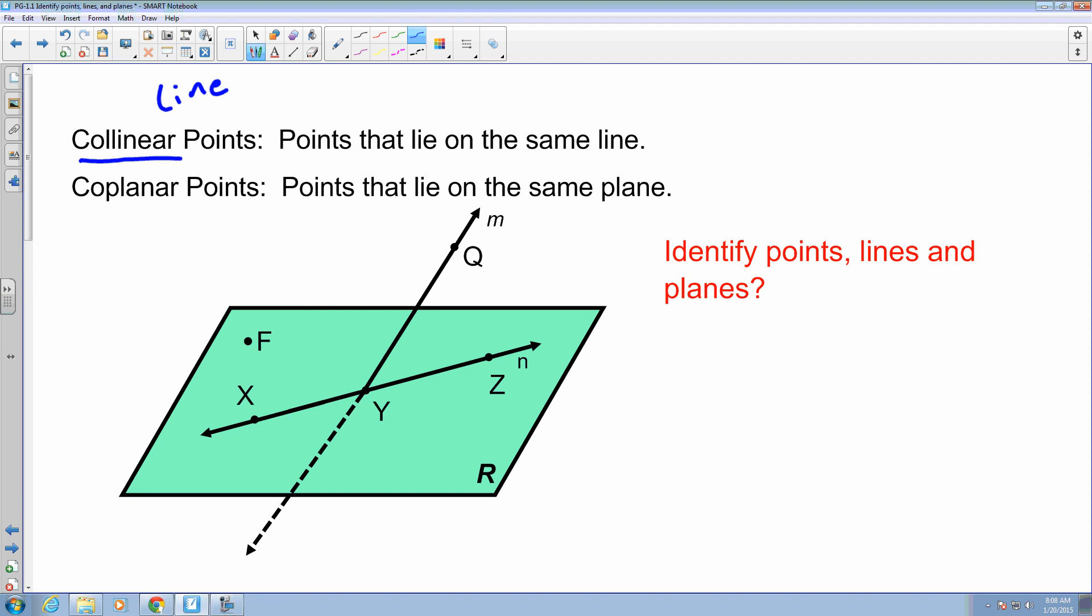And then same thing with coplanar points. Coplanar points are points that lie on the same plane. Again, the word plane is in the definition of the word. So all you have to do is say, okay, let's identify the points on the plane.